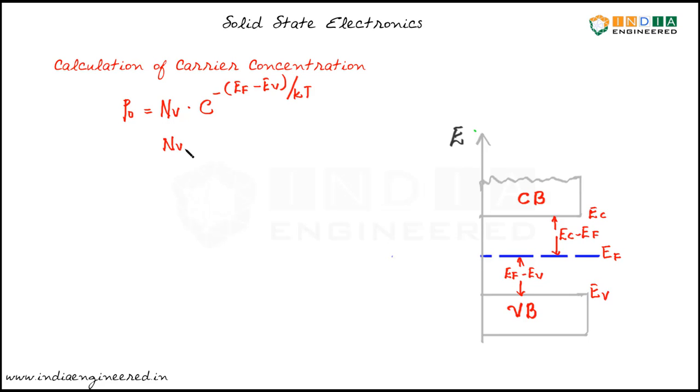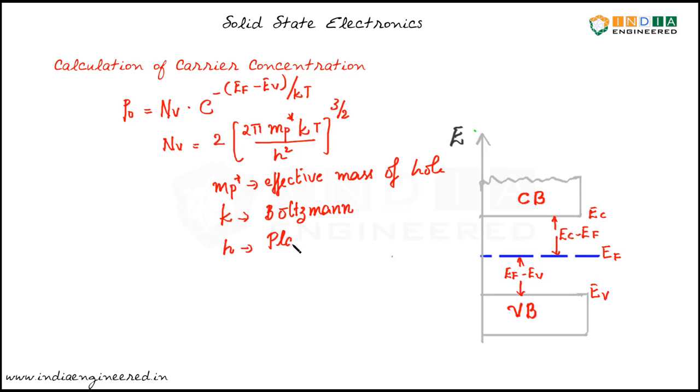Where Nv equal to 2 into 2 pi, here we have to use the effective mass of hole mp star kt by h square, the whole power 3 by 2. So mp is the effective mass of hole, k is the Boltzmann constant, h is the Planck's constant, t is the absolute temperature in Kelvin.